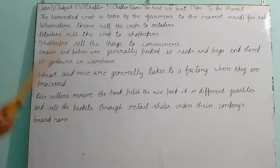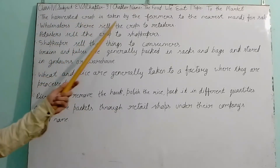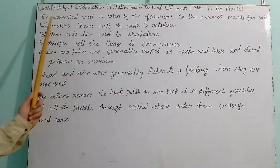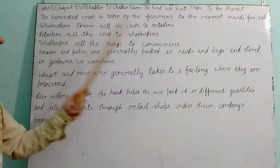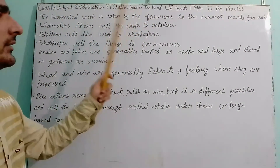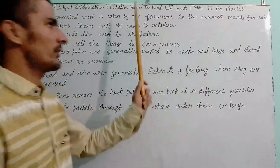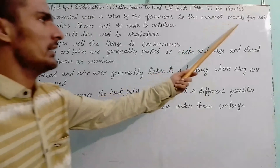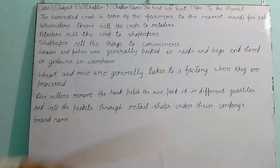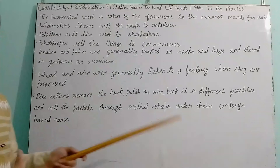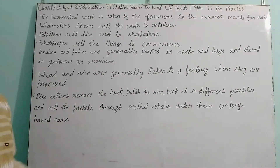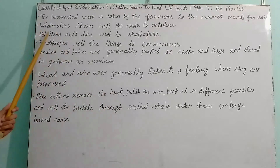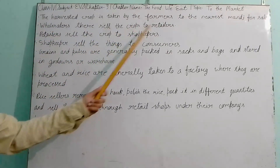So now we are going to learn what happens in the market. The harvested crop is taken by the farmers to the nearest mandi for sale. Mandi is a wholesale market where all types of harvested crops can be sold to wholesalers or to retailers.